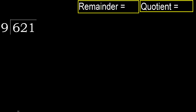621 divided by 9. 6 is less, therefore next. 62 is not less, therefore we work with 62.